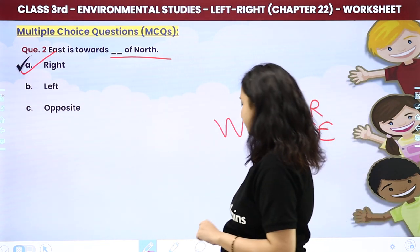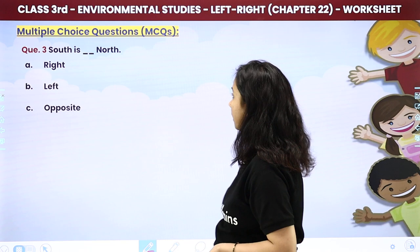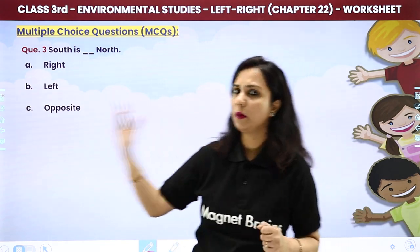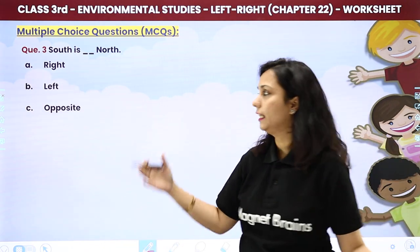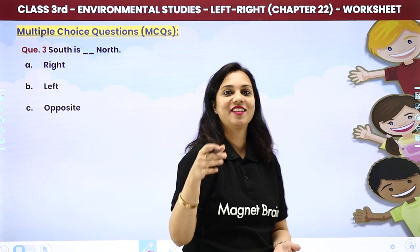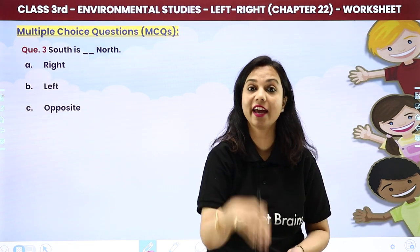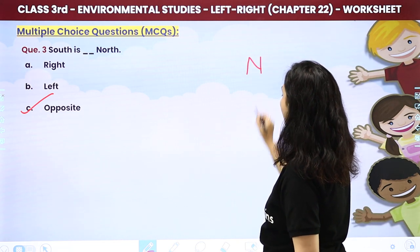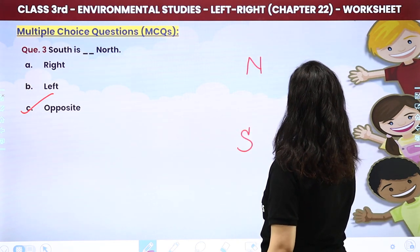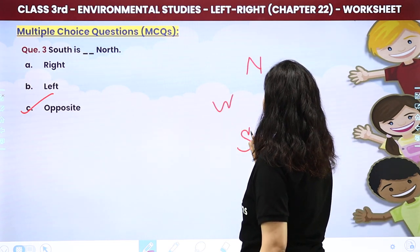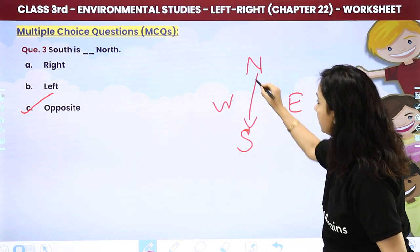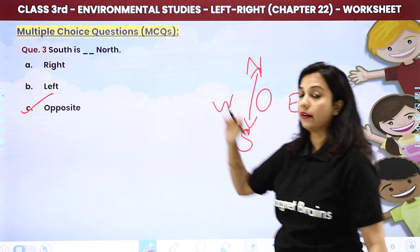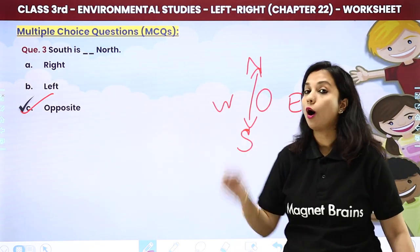South is dash north — is south to the right, left, or opposite of north? If north is at the top, then south is opposite to it. North and south are directly facing each other. That is why the correct answer is opposite.